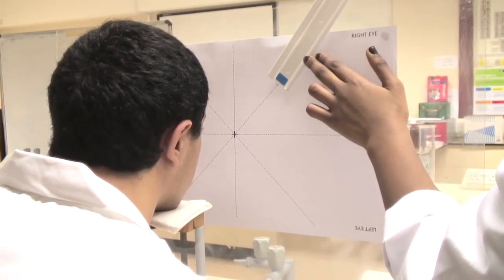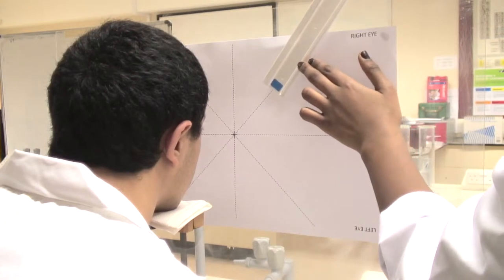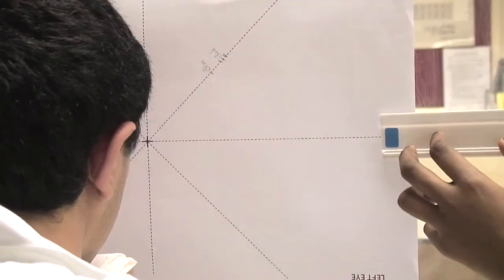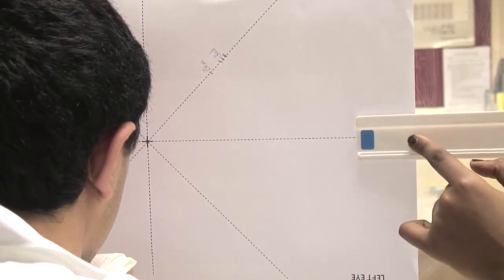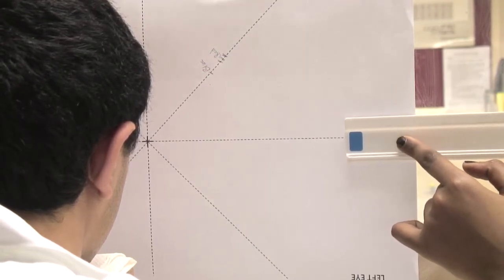Your partner will slowly move a red or blue object along each of the lines on the paper. They will start from the edge and slowly move the object into your view. They will do each line in turn.